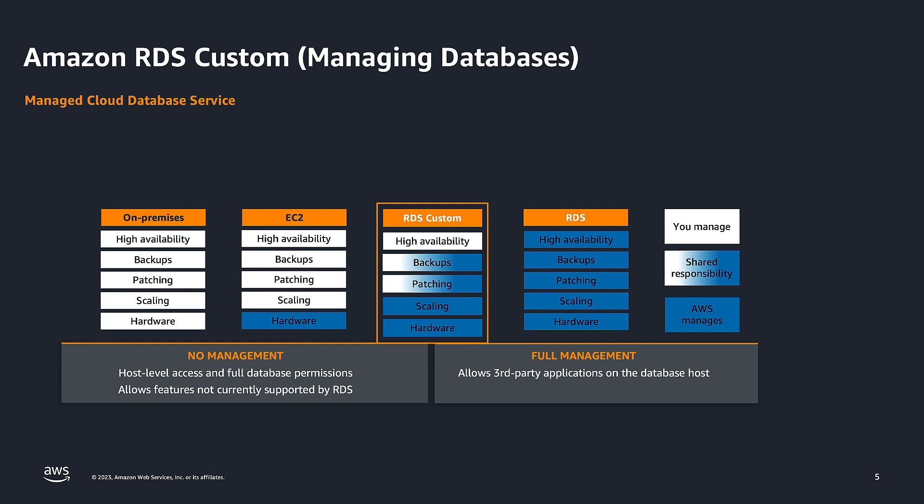With RDS Custom, customers retain full access to resources and can make customizations that could interfere with automation. Therefore, additional guardrails are built within RDS Custom to support this automation. With RDS Custom, there is a shared responsibility for tasks like backups and patching between customers and RDS. With Amazon RDS Custom for Oracle, you can customize your database server host and operating system, apply special patches, or change database software settings to support third-party applications that require privileged access.